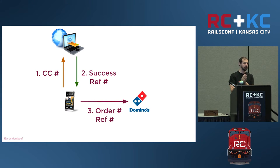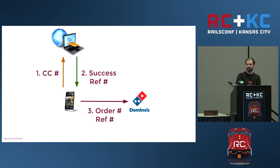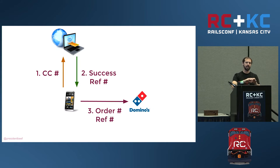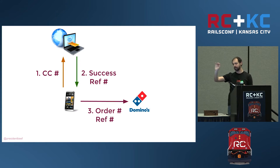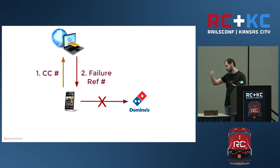The payment processor would send back a transaction ID or reference number for the credit card transaction. Then the app would send it to Domino's with your order and they would make it. He noticed: if there's a failure, it just doesn't send it to Domino's. The response from the payment processor included an authorization status — for example, not authorized, reason: declined, status: seven, meaning declined.